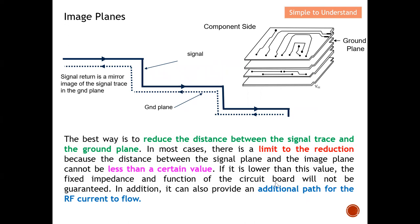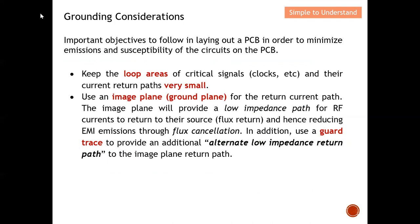In addition, if the planes are too close, it can provide an alternative path for RF current to flow. If they are almost sticking together, this alternative path can actually become a driving source — the current may travel along the return path instead of the signal path, which becomes another issue. So keeping the distance too small can be problematic. The key idea of implementing the image plane is to keep the loop area as small as possible.